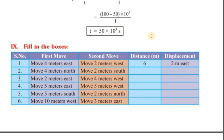Distance versus displacement example: traveling 4 meters east, then 2 meters — total distance is 4 + 2 = 6 meters. But displacement is 2 meters east, which is the shortest distance between the two points.